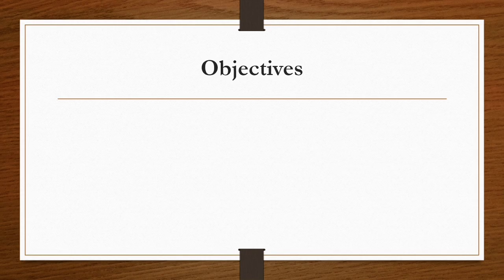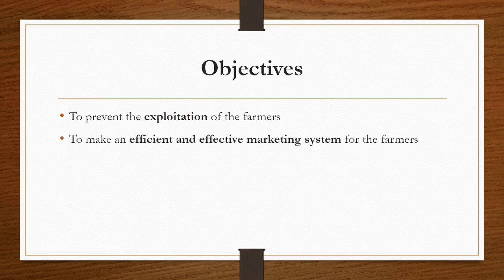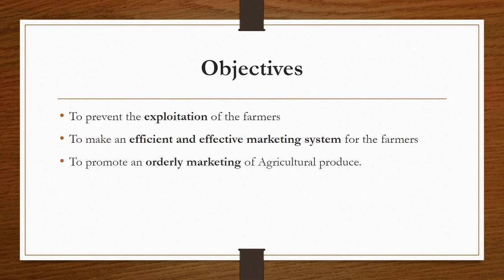The main objectives of establishing regulated markets are: first, to prevent the exploitation of farmers — farmers are to be protected from over-exploitation in prices; second, to make an effective and efficient marketing system for the farmers so that they may sell their produce directly to consumers at reasonable prices; and third, to make orderly marketing of agricultural produce.